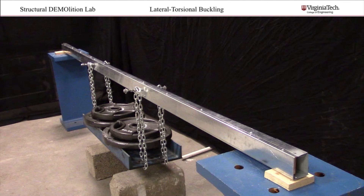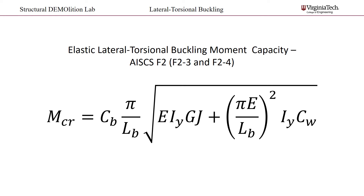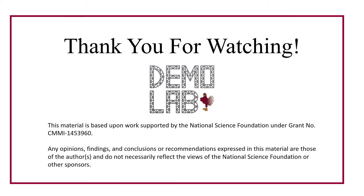The rectangular section can hold more load. Let us take a look at why this is. Shown here is the equation for the moment capacity limited by lateral torsional buckling. This equation illustrates why the section similar to a rectangular HSS would have a greater resistance to this failure mechanism. The rectangular HSS section has a greater moment of inertia about the y-axis, greater resistance to warping torsion, and most importantly, its resistance to pure torsion is much, much greater. This is due to the way shear flows around the section.